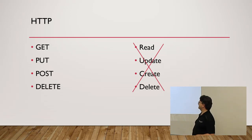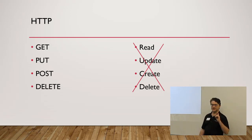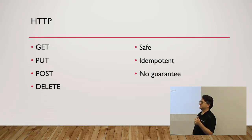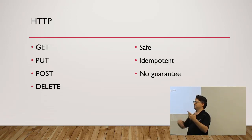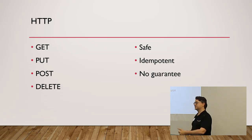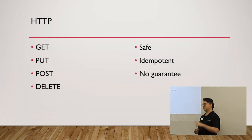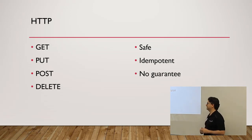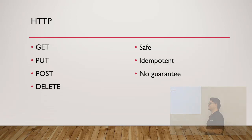Instead of mapping them to read, update, create, and delete, I want you to think about them in terms of: safe, idempotent, or no guarantee. Safe means when I receive this message, nothing is going to change about my observable state. Idempotent means something might happen the first time, but if you send that same message again it won't affect the system the second or third time — it has one effect and doesn't change thereafter. With no guarantee, every time you send me a message I might change state.